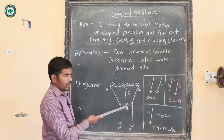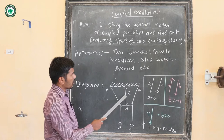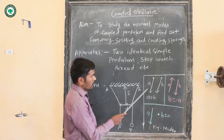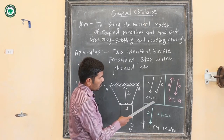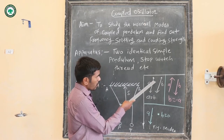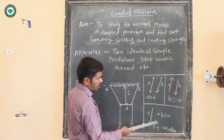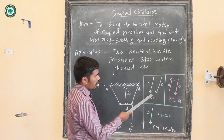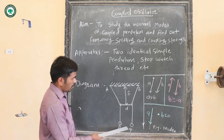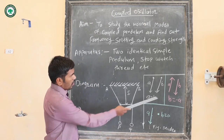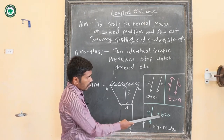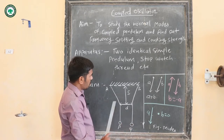Here we study three normal modes. In the first mode, the two simple pendulums oscillate together in the same direction with the same amplitude. In the second mode, they oscillate in opposite directions. In the third mode, one pendulum is oscillating while the other is at rest.